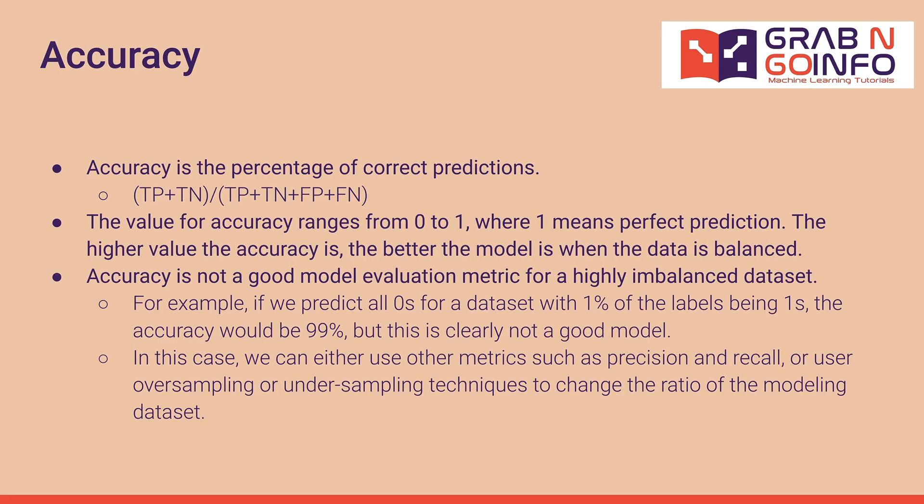Accuracy is the percentage of correct predictions. It is calculated using the total of true positives and true negatives divided by the total number of records. The total number of records is the sum of true positives, true negatives, false positives, and false negatives. The value for accuracy ranges from 0 to 1, where 1 means perfect prediction. The higher the accuracy, the better the model is when the data is balanced.